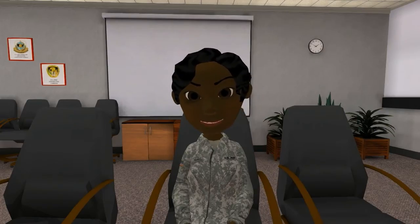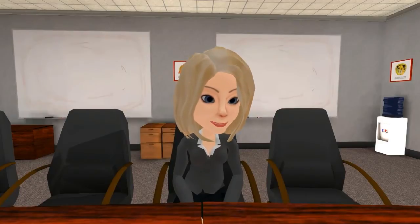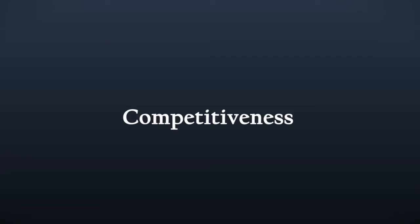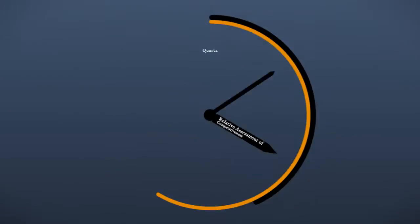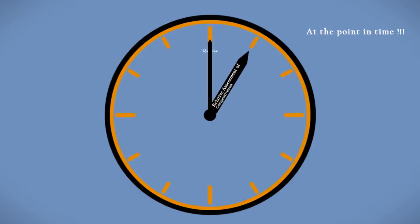We've been talking about who makes this determination and when it is made, but can someone explain to me exactly what this determination is? The competitive range determination is an assessment of the competitiveness of the proposals when compared to each other. The results of all evaluation factors — price or cost as well as all non-cost factors — must be considered. It's important to emphasize that this is a relative assessment of the merits of the proposals against each other at the point in time when the determination is made. Therefore, this relative standing can, and probably will, change at different points in time.